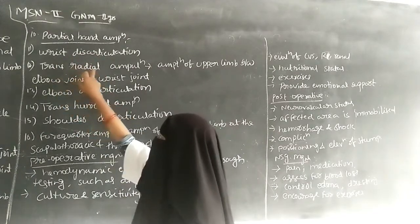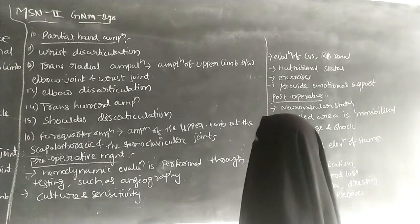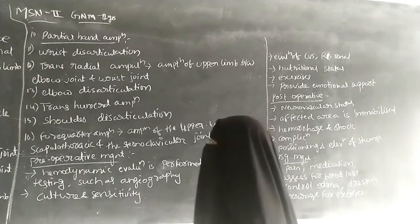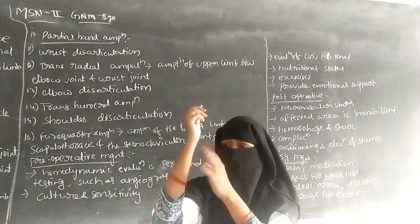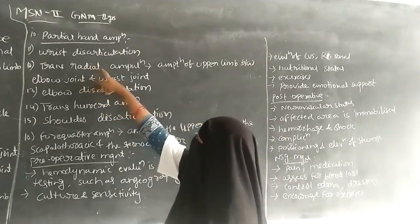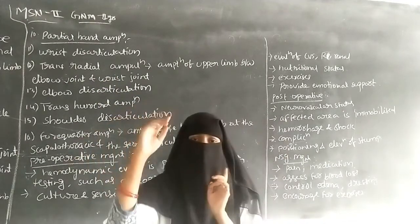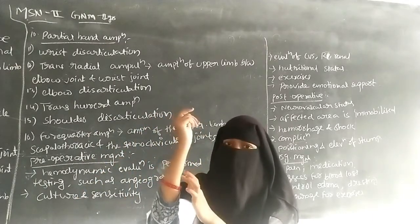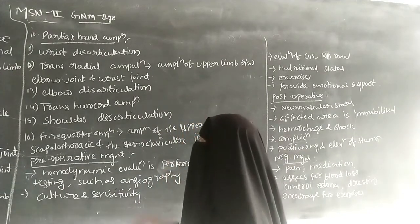Next is transradial amputation, which means amputation of the upper limb between the elbow joint and the wrist joint. Between these two joints, the limb has to be removed in transradial amputation.